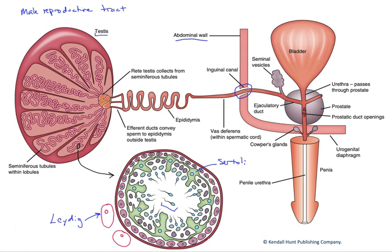In addition to the tubular connections of the reproductive tract itself, there would be blood vessels, lymphatics, and nerves that cross this inguinal canal within what's called collectively the spermatic cord.